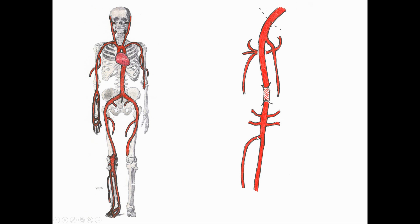As we continue down, the popliteal artery gives off an anterior tibial artery, which pierces the interosseous membrane into the anterior compartment of the leg. The posterior tibial artery stays in the posterior region of the leg, supplying the muscles there, and gives off a fibular artery supplying the large muscles on the posterior and lateral side of the leg. The posterior tibial and anterior tibial arteries are the ones that actually supply the foot itself.